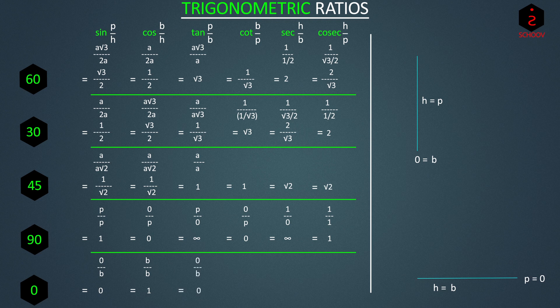Cot is 1 by tan, so cot 0 is 1 by 0, infinity. Sec 0 is 1 by cos 0, which is 1. And cosec 0 is 1 by sin 0, which is 1 by 0, infinity.